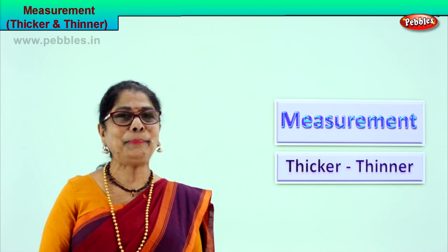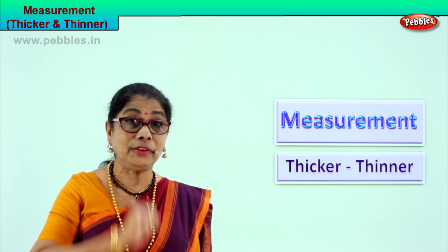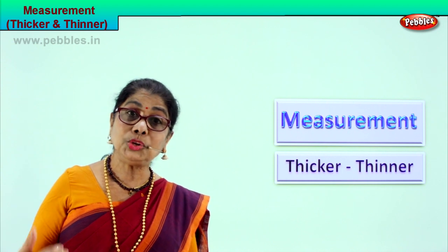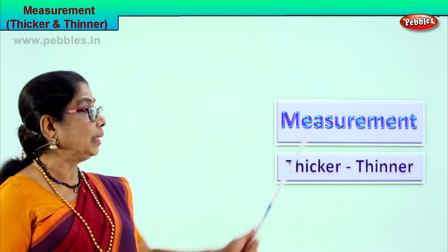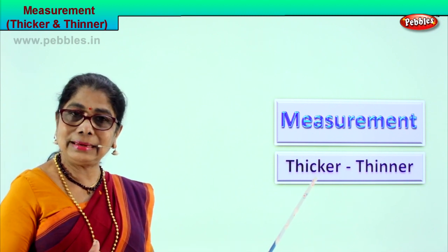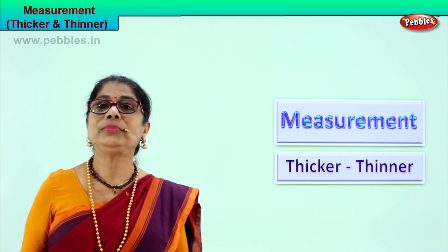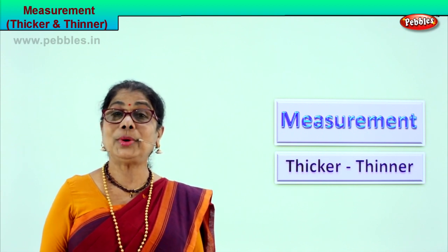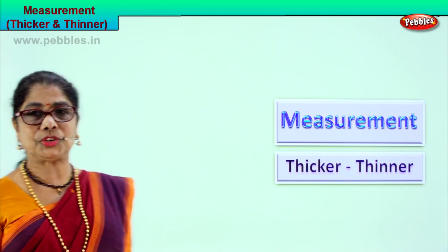Hi children! Some more measurements we are looking at in pictorial form — thicker and thinner. All measurements we are trying to understand through pictures. Here we are doing two measurements: thicker and thinner. When you look at pictures you understand better. What are the two measurements? Thicker and thinner. Let's look at our first picture.